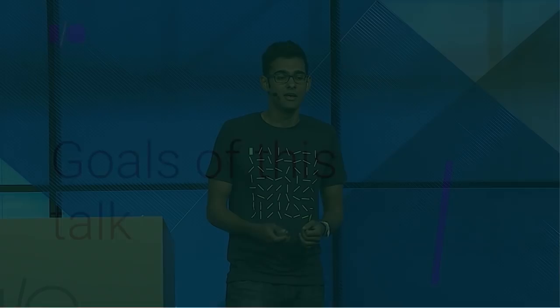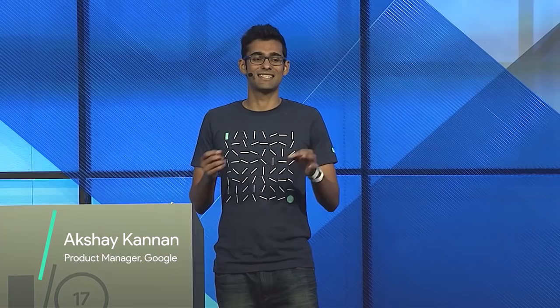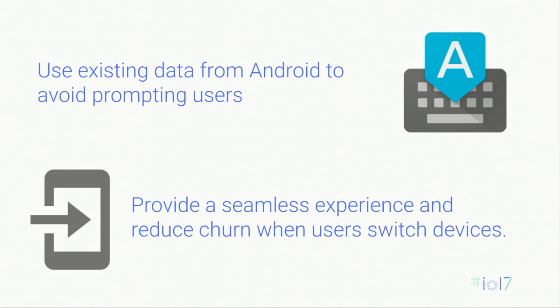Why are we giving this talk? What are the goals we want to accomplish? The first is to get more apps to use existing data from Android and to avoid prompting your users. Throwing up any kind of blank form in your app, such as an app login or a credit card, can create friction and result in drop-off when users don't know this information offhand. We've created APIs to automatically get this information when it's available. Secondly, we'll talk about how you can provide a seamless experience and reduce churn when your users switch devices.